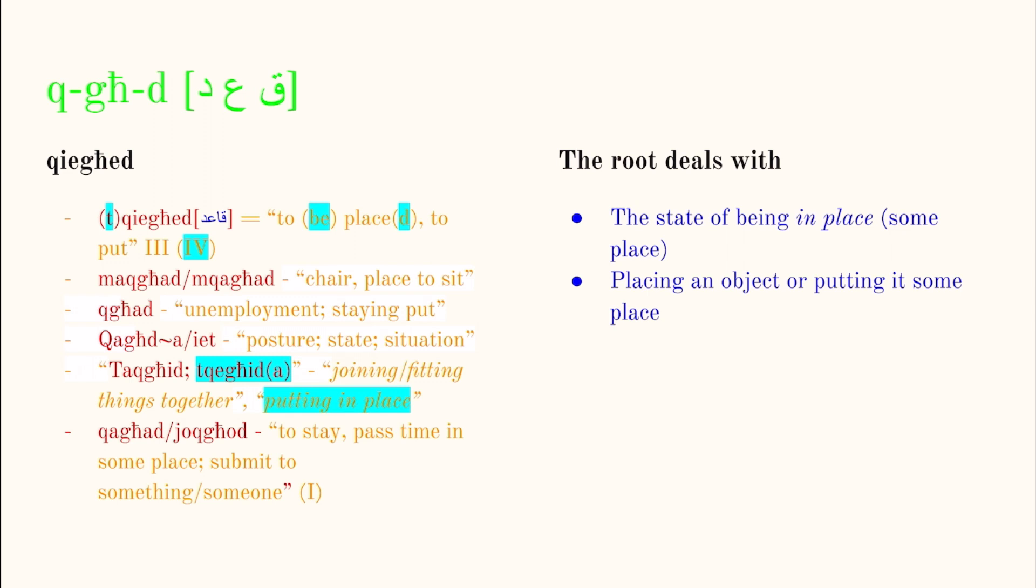So the first one, qieghed means to place or to put. This is a type three verb. And then we have tqieghed, which I've put in light blue highlight, basically turns this into a passive verb. So this means to be placed or to be put. The second one, this one is actually shared with Arabic. So Arabic has this same word. However, I believe in Arabic it only means a seat. I believe most Arabic dialects, if not the whole language, is using a word like kursi for a chair. At least that's the word I've learned in my classes. This would be pronounced maqghad or maqghad. Like I said, it means chair, place to sit. It could also mean seat.